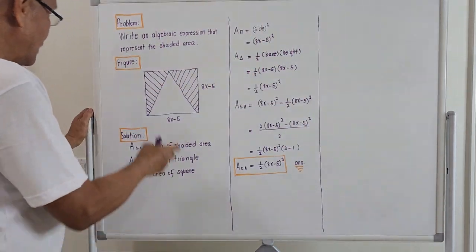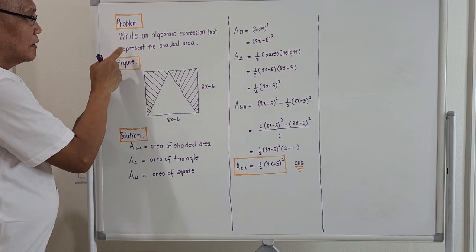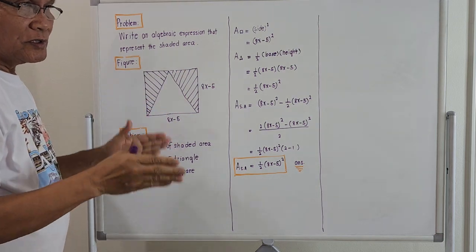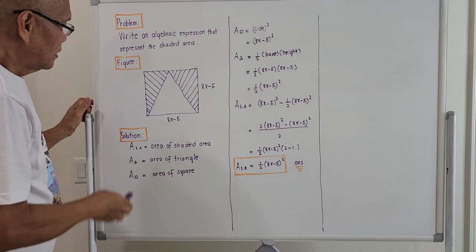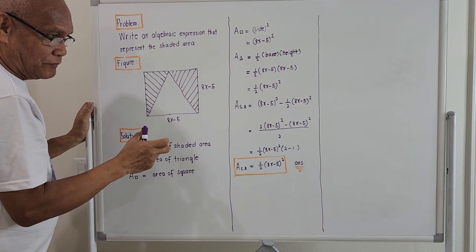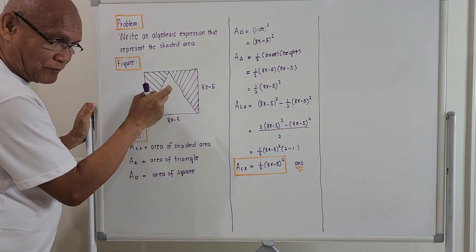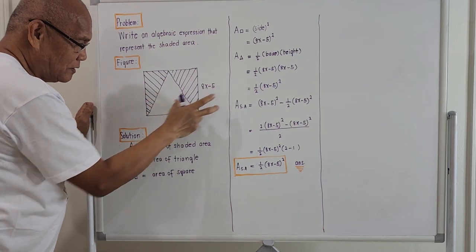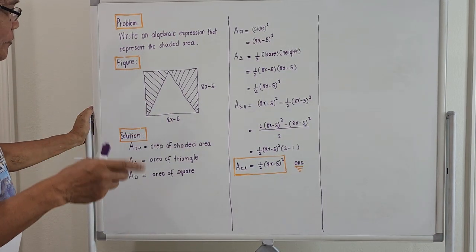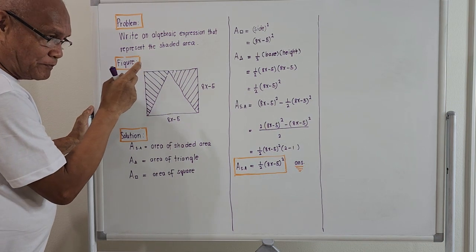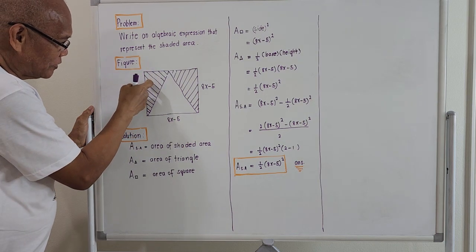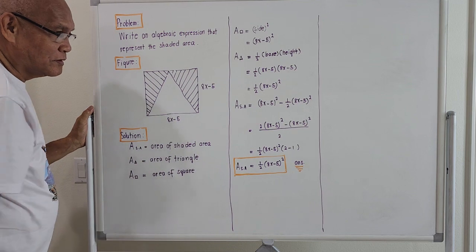Let's read the problem: 'Write an expression that represents the shaded area.' We are given a figure here — a square. The side of the square is represented by the expression 8x minus 5. The problem is asking us to write an expression that represents the shaded area, meaning this portion here plus this area here.